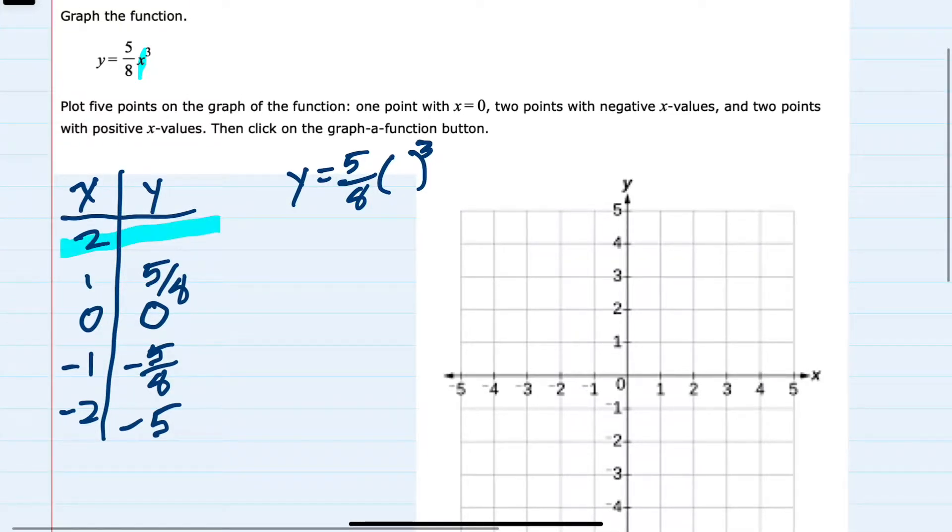Once more with x equals 2, we substitute in a 2 and simplify: 5 eighths times 2 cubed, which is 8, the eighths cancel, and y equals a positive 5 this time.